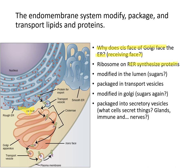Proteins are modified in the lumen of the ER by folding and attachment of sugars, then packaged into transport vesicles. They are further modified in the Golgi by the addition of sugars — many proteins are glycoproteins with many different types of sugar molecules attached to them.